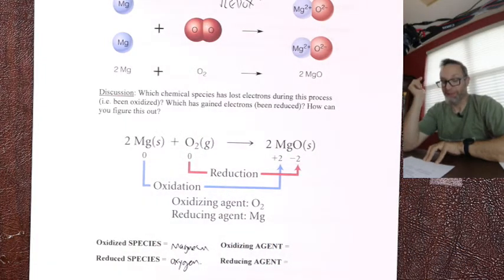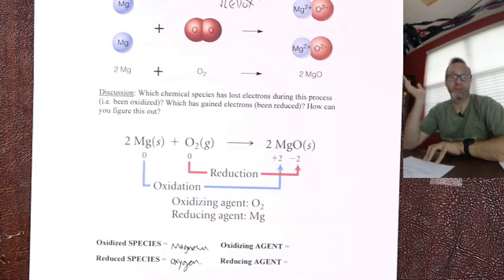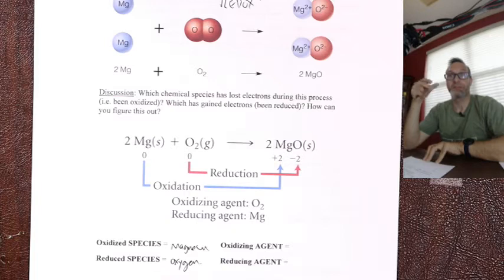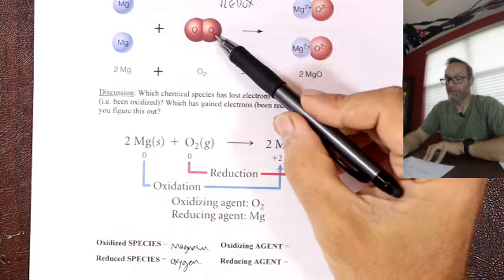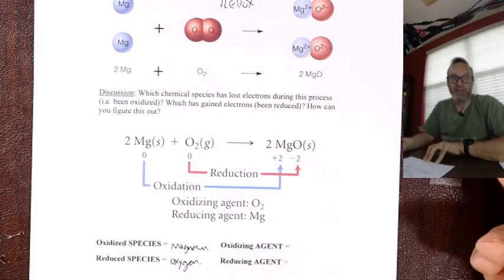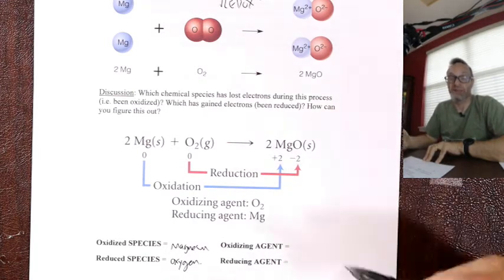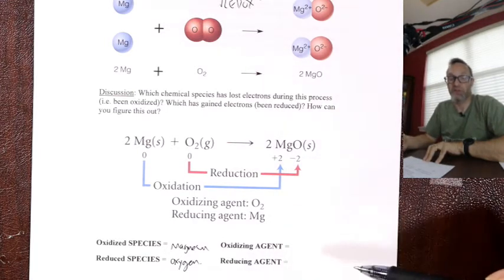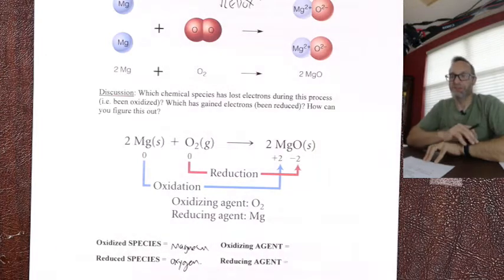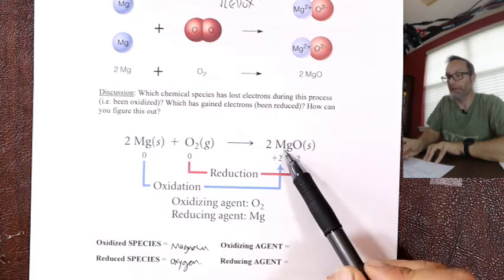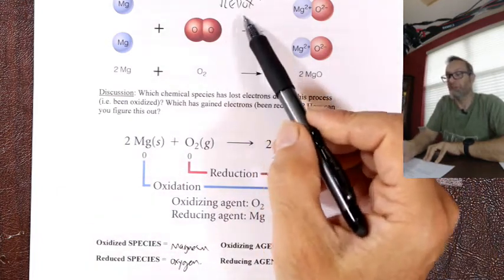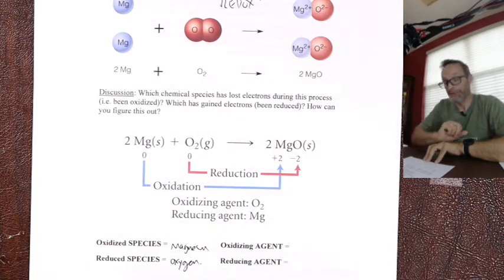Metals pretty much always are oxidized. The word oxidation actually comes from adding oxygen — whenever you burn something, it forms an oxide. Oxygen is an electron stealer. I make magnesium oxide, magnesium loses its electron, it's oxidized. If you ever see a reaction featuring oxygen, the thing oxygen is binding with has become oxidized. Any combustion has this redox under the hood.